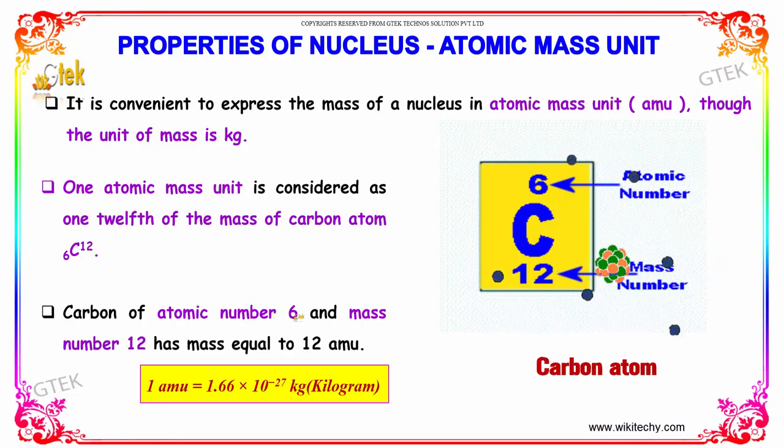Carbon of atomic number 6 and mass number 12 has mass equal to 12 amu. So 1 amu is equal to 1.66 into 10 power minus 27 kilogram.